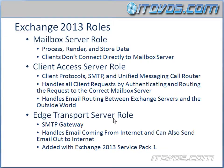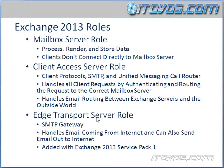And then we have our Edge Transport Server role. Again, this was added with Exchange 2013 Service Pack 1. This acts as an SMTP gateway, which means it handles email coming in from the internet. It can also help send email out to the internet. So if joeblow at hotmail.com replies back, that email has to get into our Exchange Server and eventually get to our Mailbox Server. We don't want a direct connection normally to our Client Access Server role or Mailbox Server role from out on the internet. So the email will actually be sent to our Edge Transport Server, which will normally be in what's called a DMZ — a secure area of our network that, if it has a virus or something like that, doesn't affect our internal network. In addition, this Edge Transport Server role can do things like virus checking and spam checking before it gets to our internal servers, which are our Client Access Servers and our Mailbox Servers.